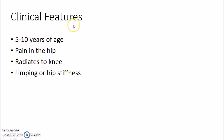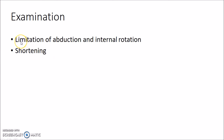Now let us see about the clinical features of Perthes disease. Perthes disease usually affects boys in the age group of 5 to 10 years. There will be pain in the hip which radiates to the knee. There can be limping or hip stiffness. On examination, the affected limb shows limitation of abduction and internal rotation, and there can also be shortening of the affected limb.